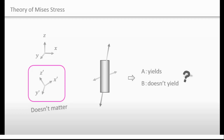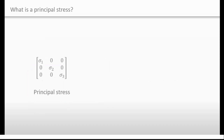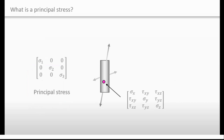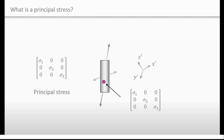Have you heard of principal stress? Let's say you have a stress tensor under a given coordinate system. If you choose a coordinate system carefully, you can find one whose stress tensor has no shear stresses. This is called the principal stress. The important thing is that principal stress doesn't depend on coordinate systems.